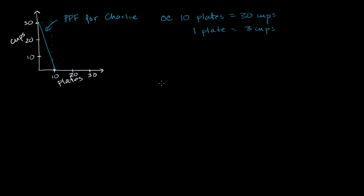Now let's think about another producer in this market for dinnerware — let's call her Patty. If Patty focused all of her time on cups, she could produce 10 cups in a day. And if she focused all of her time on plates, she could produce 30 plates in a day. She also has a linear production possibilities frontier, so that right over there is the PPF for Patty.